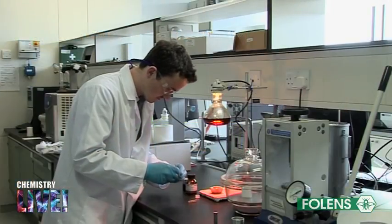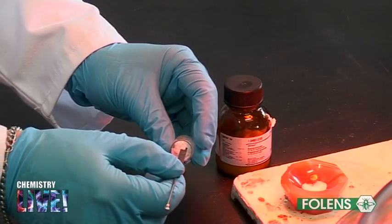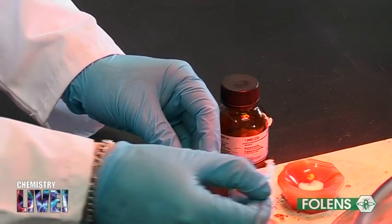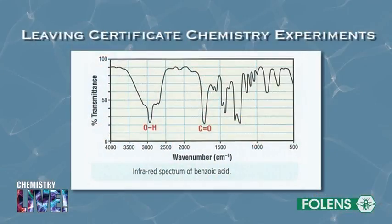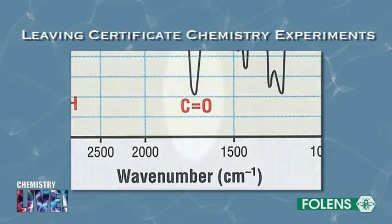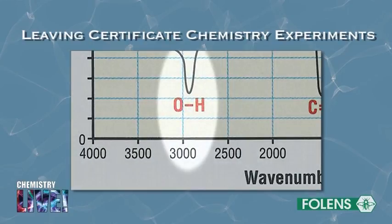It is found that organic compounds absorb infrared radiation. The infrared radiation is absorbed by the vibrations of the bonds in the molecules. For example, a C double bond O bond absorbs infrared radiation at a particular frequency, and an OH bond absorbs infrared radiation at a different frequency.